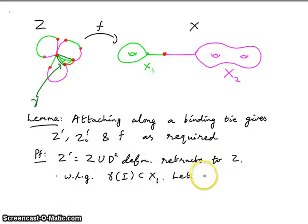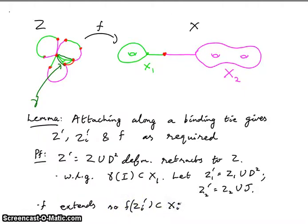So then you let Z'₁ equal Z₁ union D²—so what we are doing is we are coloring everything green. But more surprisingly, Z'₂ is Z₂ union J. And now the conditions work like magic. So f extends: Z'ᵢ is mapped by f into Xᵢ.